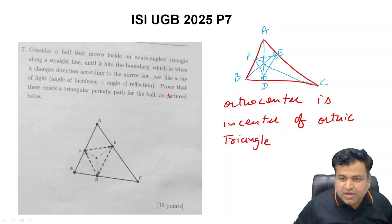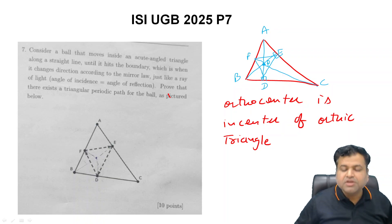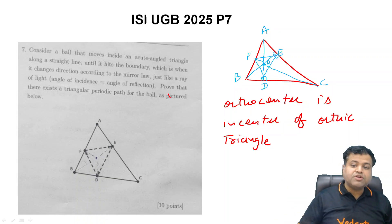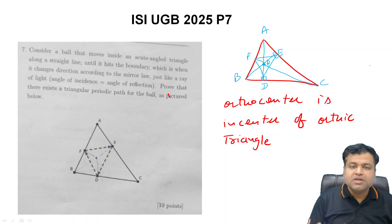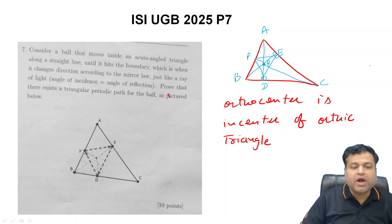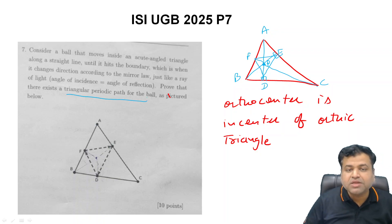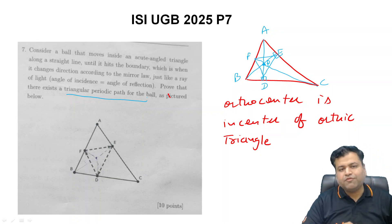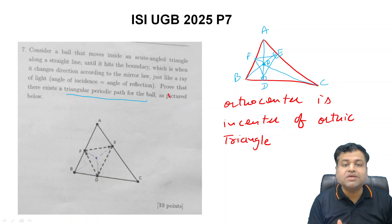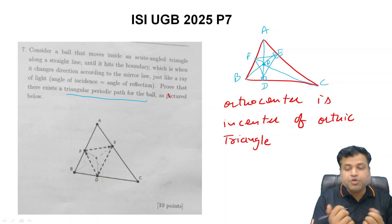The incenter of this orthic triangle DEF — let's call that point P — is actually the orthocenter of triangle ABC. And in fact, this orthic triangle DEF is the required triangular periodic path being asked for in the problem. If you understand this concept clearly, the question is essentially a one-liner.